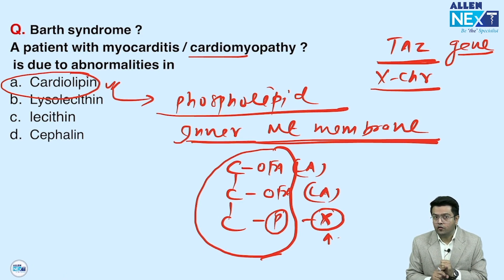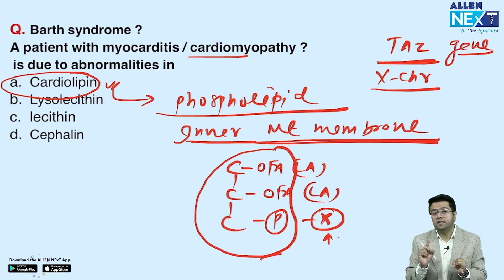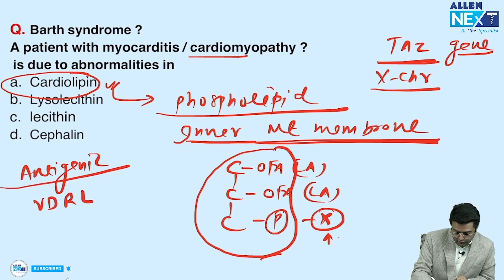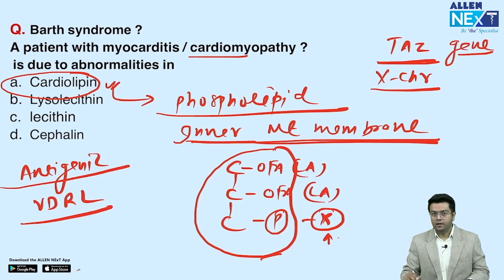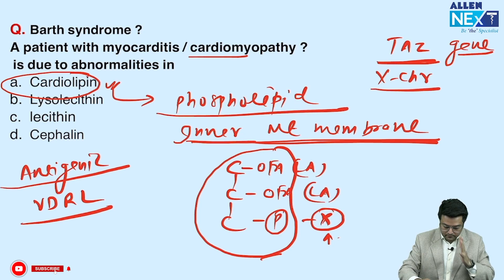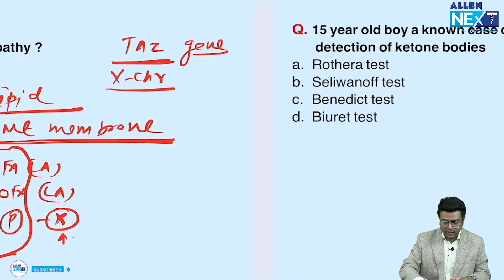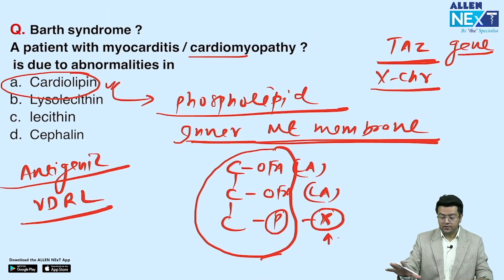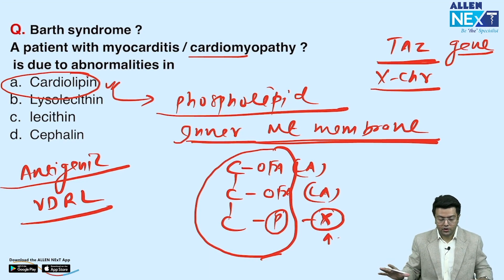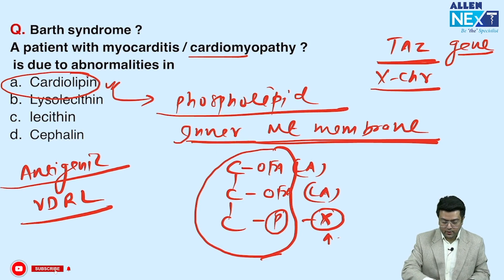Cardiolipin is an antigenic lipid and is used as the antigen in the VDRL test. This is an older exam question — previously they asked about cardiolipin directly rather than through Barth syndrome, but the answer relates to cardiomyopathy and cardiolipin.